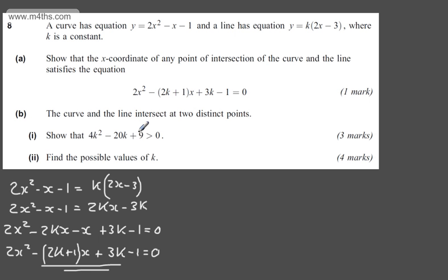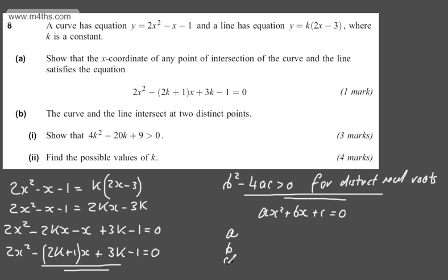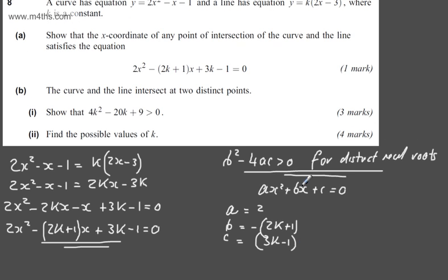In part B, the curve and the line intersect at two distinct points. For the first part, worth 3 marks, we need to show that 4k squared minus 20k plus 9 is greater than 0. For distinct real roots, the discriminant b squared minus 4ac must be greater than 0. Identifying coefficients from our quadratic: a equals 2, b equals minus the quantity 2k plus 1, and c equals 3k minus 1.